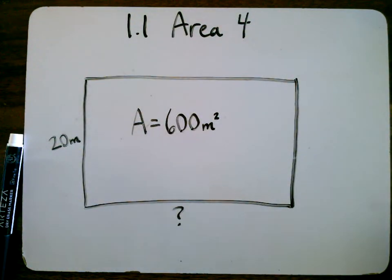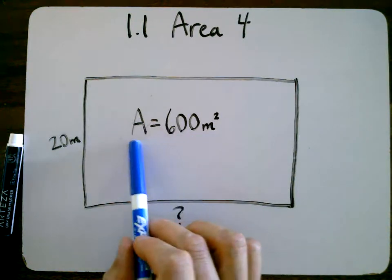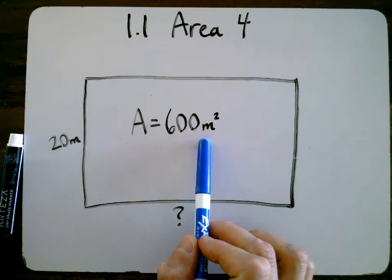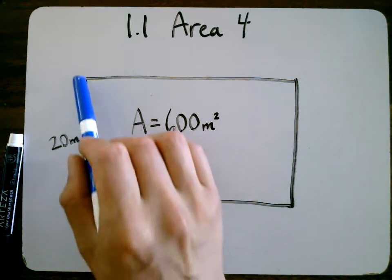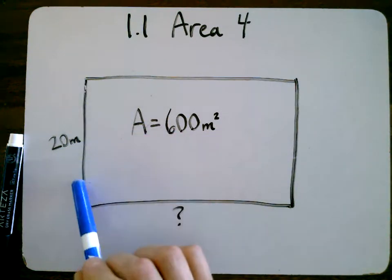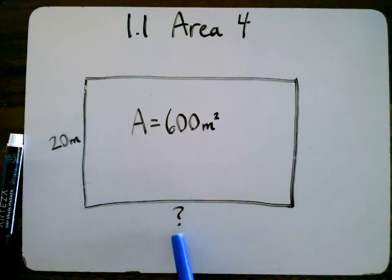Okay guys, last one here, this is part four. Let's say that Mr. Tobias has a garden, a large garden that he's working on with his class, and we know that it's got a total area of 600 square meters. We also know that one of the dimensions, one of the sides, is 20 meters, but we're not sure what the other one is.